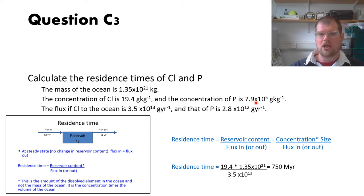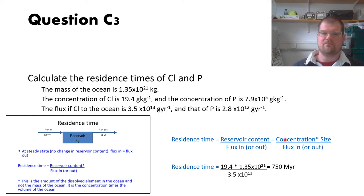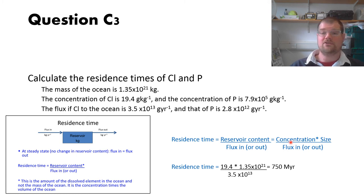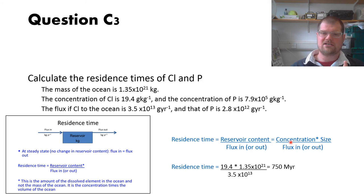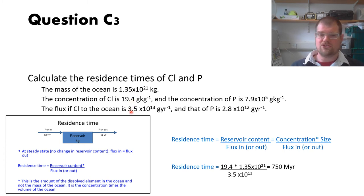In calculations where you have input data of variable precision, you should always quote your answer to the same precision as the lowest-precision input data. When dividing or multiplying numbers, use the number of significant figures from the input data. The lowest-quality data here are the fluxes, and they are to two significant figures.